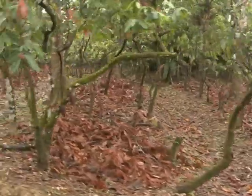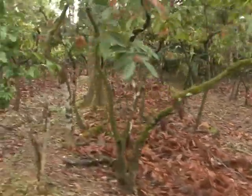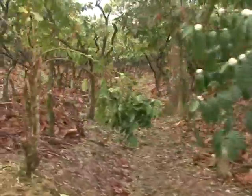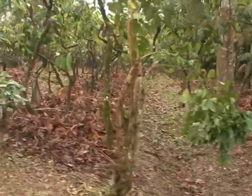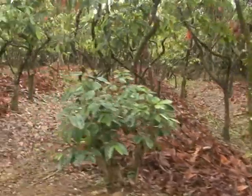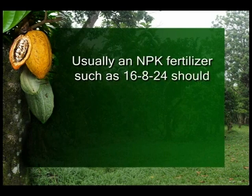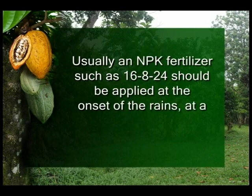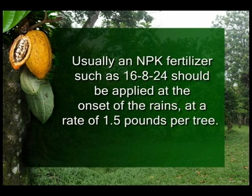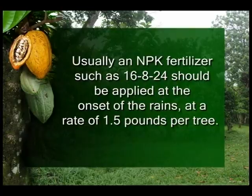Where organic manure is available, it can be applied using the broadcast method, which involves scattering it throughout the cocoa fields. Usually, an NPK fertilizer such as 16-8-24 should be applied at the onset of the rains, at a rate of 1.5 pounds of fertilizer per tree.